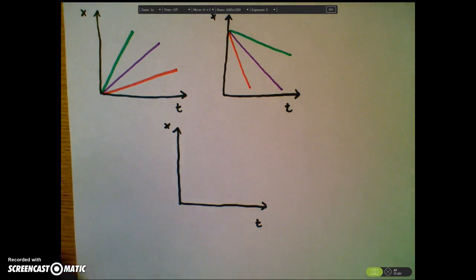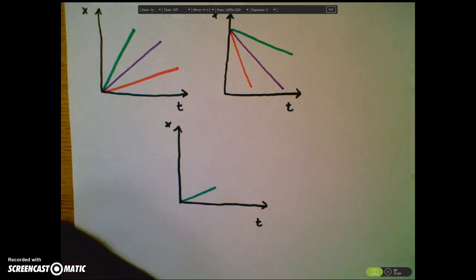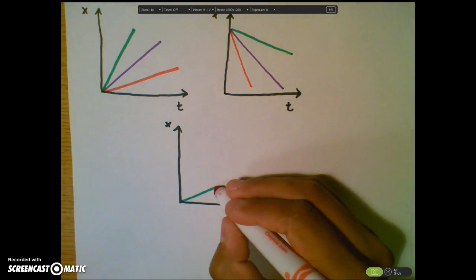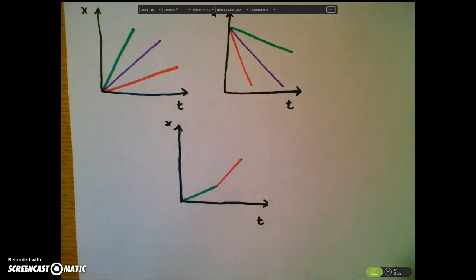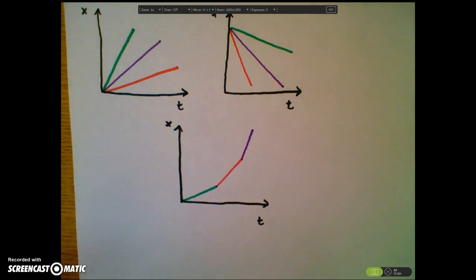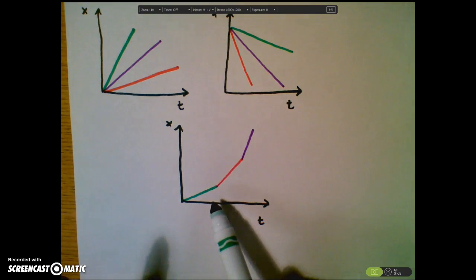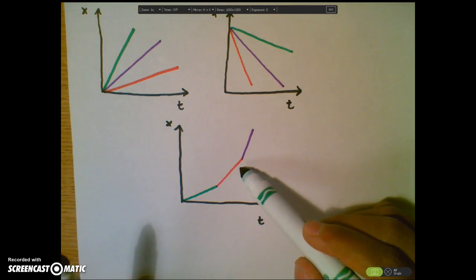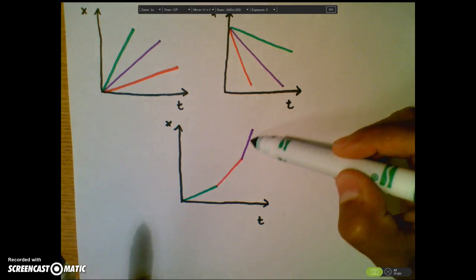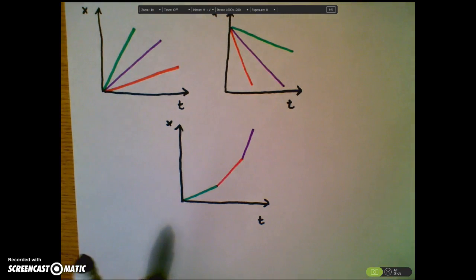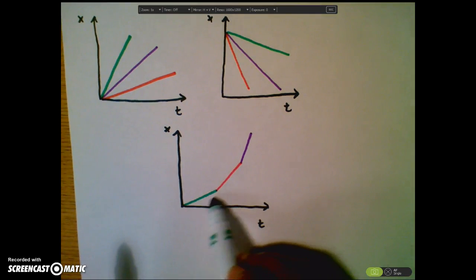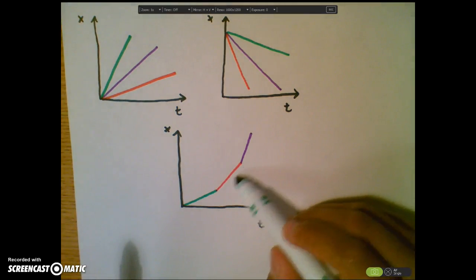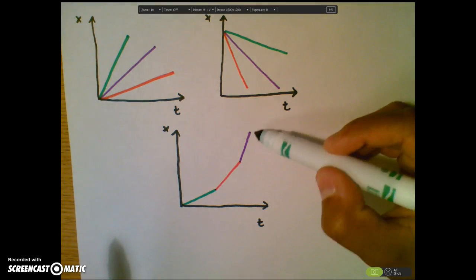Looking at something like this: the object starts off traveling relatively slow compared to the other motions it's about to take. Then it quickly changes speed and moves much quicker in the positive direction with a positive velocity, then changes speed again, traveling even quicker in the positive direction. We can figure out each of these velocities by calculating the slope of each segment of the line.